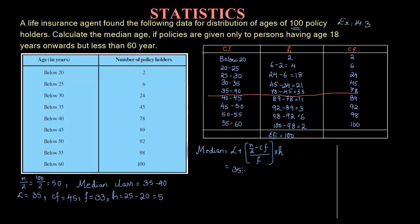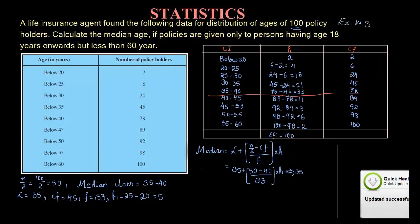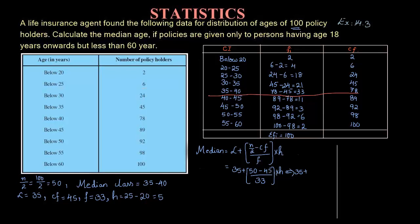Substituting: Median = 35 + [(50 − 45) / 33] × 5. That is 35 + [5/33] × 5, which is 35 + 25/33. Note that H multiplies only the bracket term, not the 35. So we have 35 + 25/33.